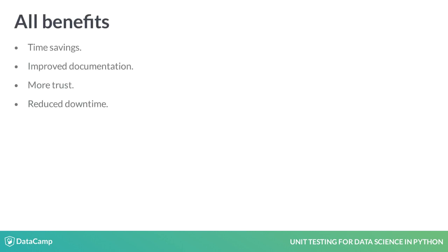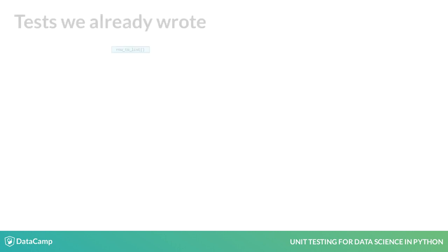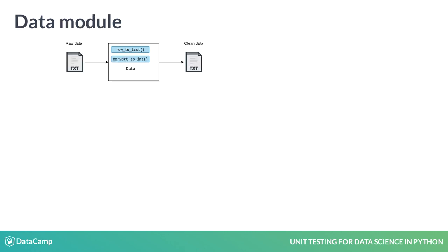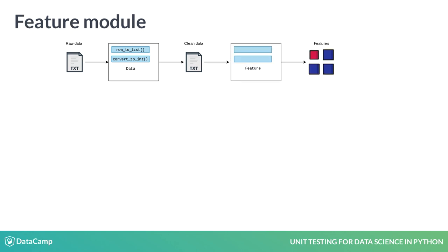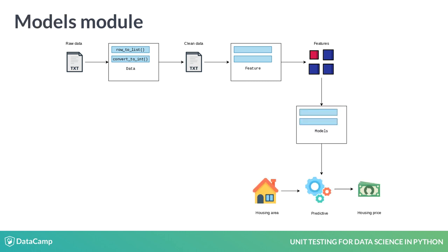All of these benefits make the case stronger for writing unit tests. In this course, we will write unit tests for all functions in the example linear regression project. We already wrote tests for row_to_list and convert_to_int, which are part of the data module that creates a clean data file from raw data on housing area and price. Very soon, we will see functions from the feature module, which compute features from the clean data. Later in the course, we will meet the models module, which will output a model for predicting housing price from the features.